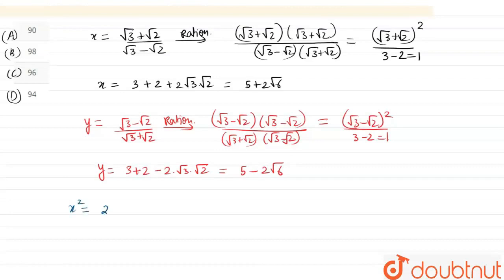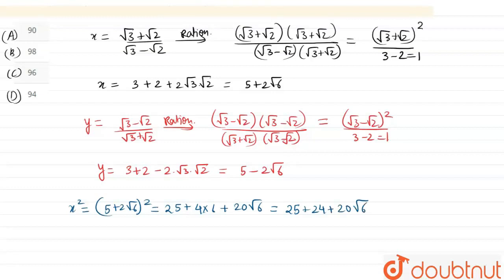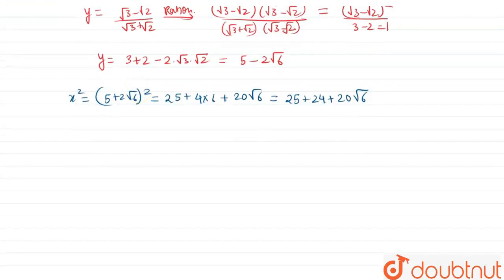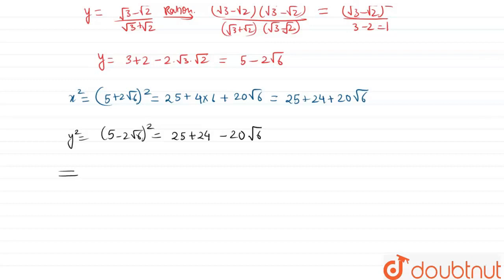Now squaring x, x² = (5 + 2√6)² = 25 + 24 + 20√6. And for y, y² = (5 − 2√6)² = 25 + 24 − 20√6. Adding both terms: 25 + 24 + 20√6 + 25 + 24 − 20√6. The 20√6 terms cancel and the answer is 98.